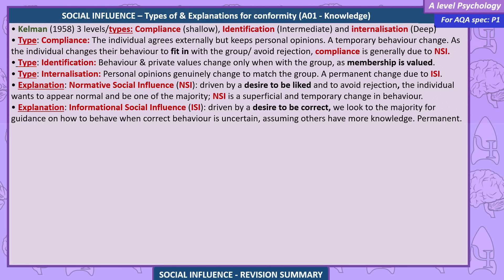Explanations. Normative social influence (NSI) is driven by a desire to be liked and avoid rejection — the individual wants to appear normal and be one of the majority. NSI is a superficial and temporary change in behaviour. Informational social influence (ISI) is driven by a desire to be correct — we look to the majority for guidance on how to behave when correct behaviour is uncertain, assuming others have more knowledge. ISI leads to a permanent change.